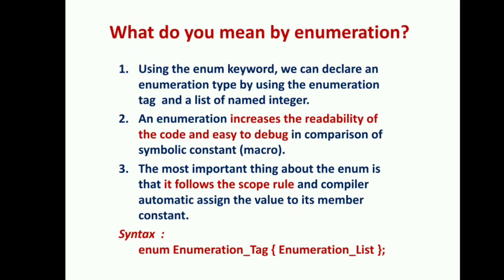The first question is: what do you mean by enumeration in C? Enumeration is a keyword that declares a tag and a list of named integers using the keyword 'enum'. Enumeration increases the readability of the code and is helpful for debugging. It follows the scope rule, and the compiler automatically assigns values to its member constants without depending on any other variables.